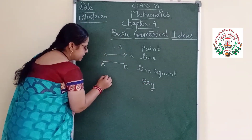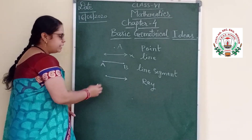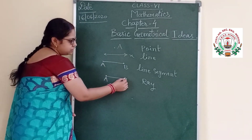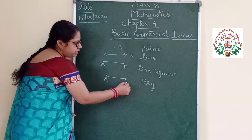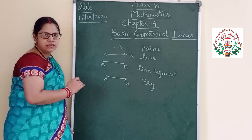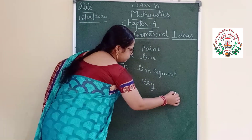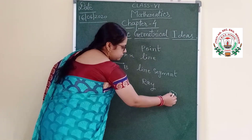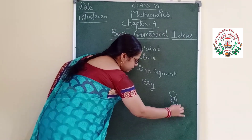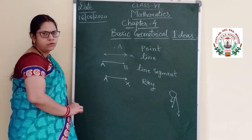A ray means it is starting from one end point and going up to where we do not know. Like a point means a capital alphabet, and this is a part of the line going up to where we do not know — like sun rays. Starting from the sun, but up to where it is going, that we do not know. The starting point we know, but the end point we do not know.